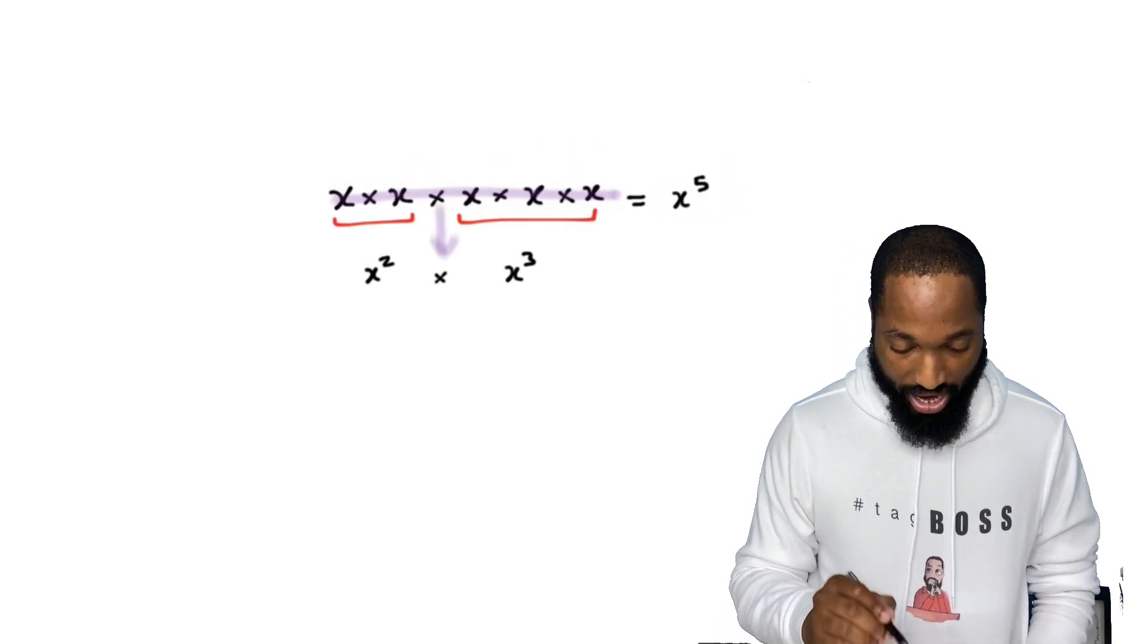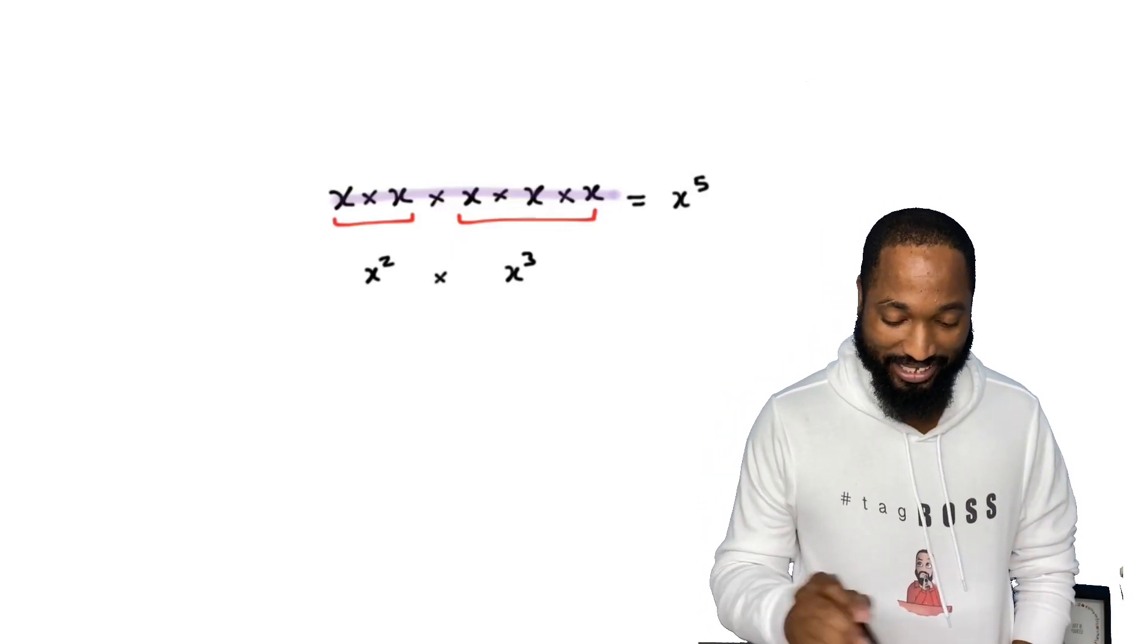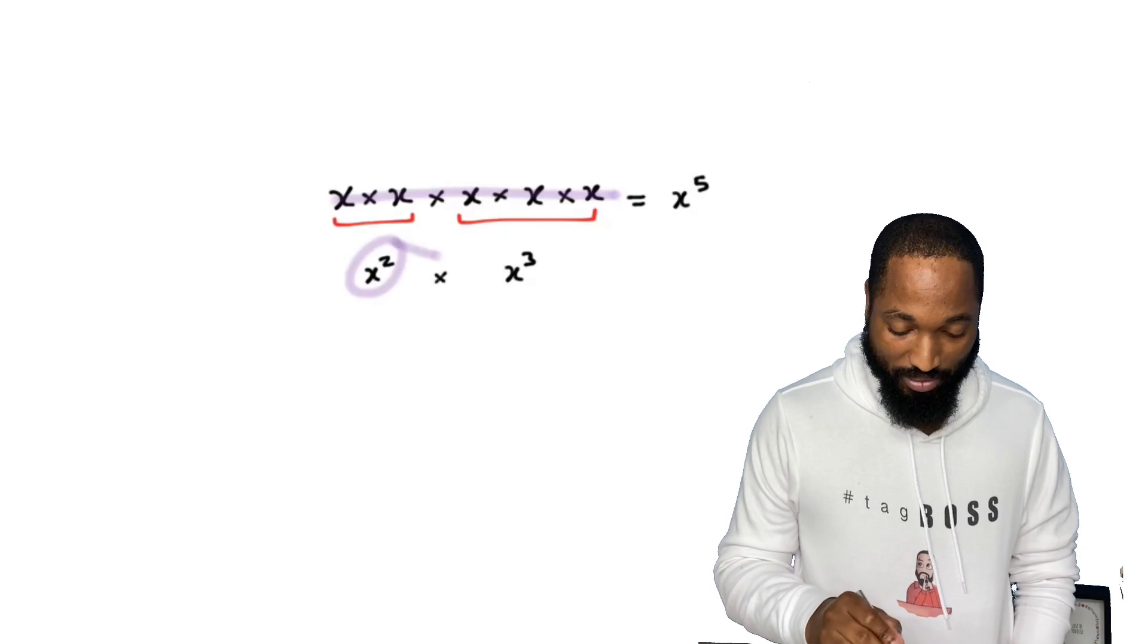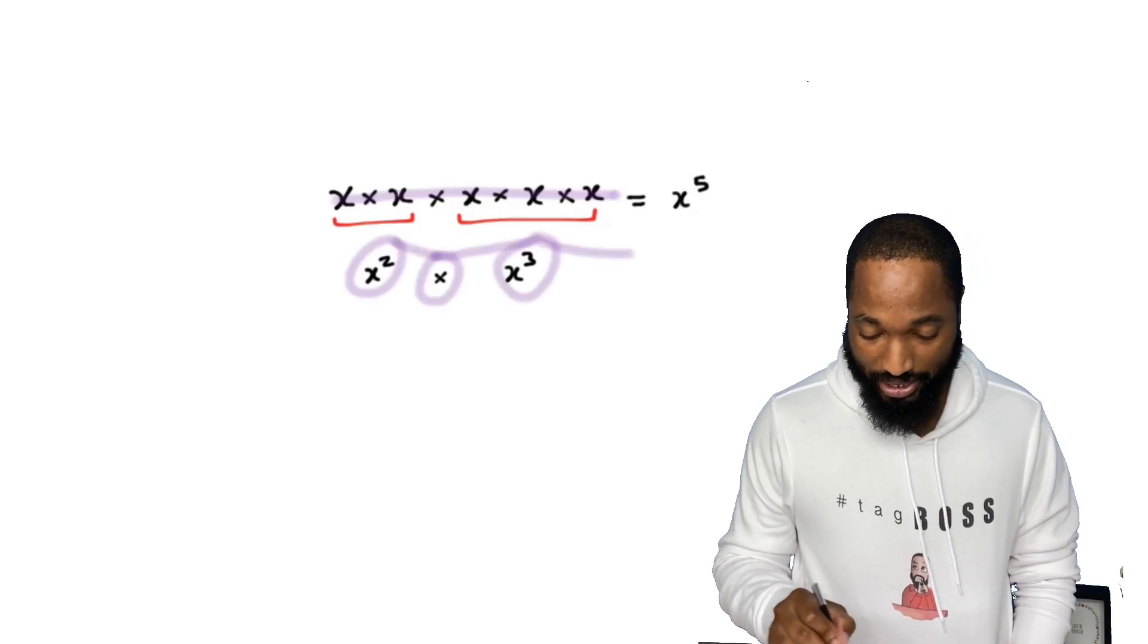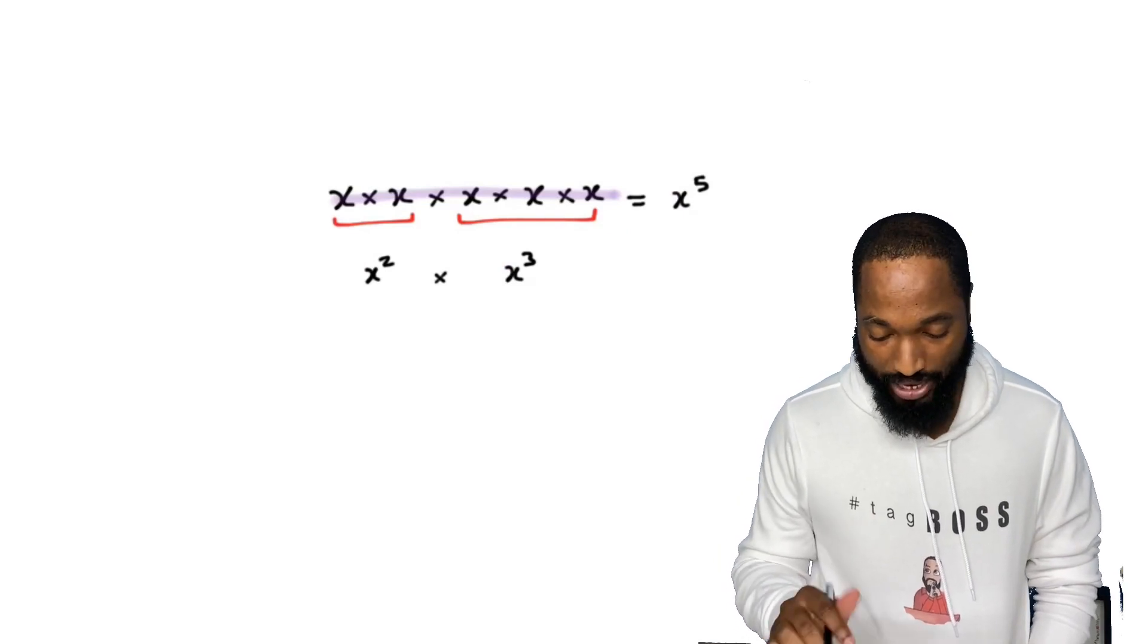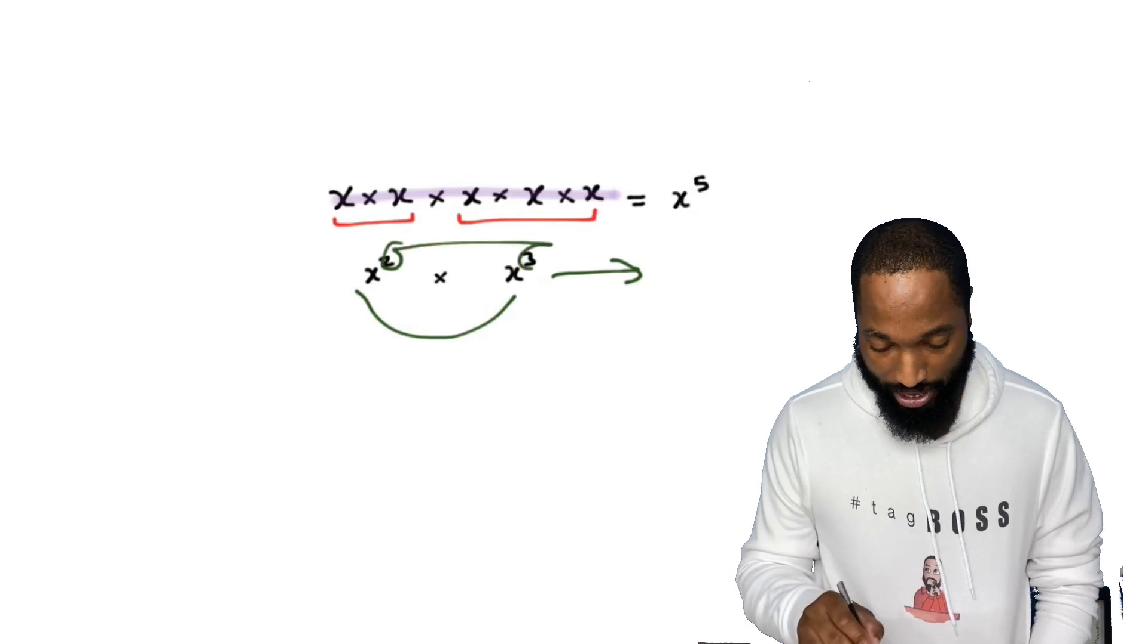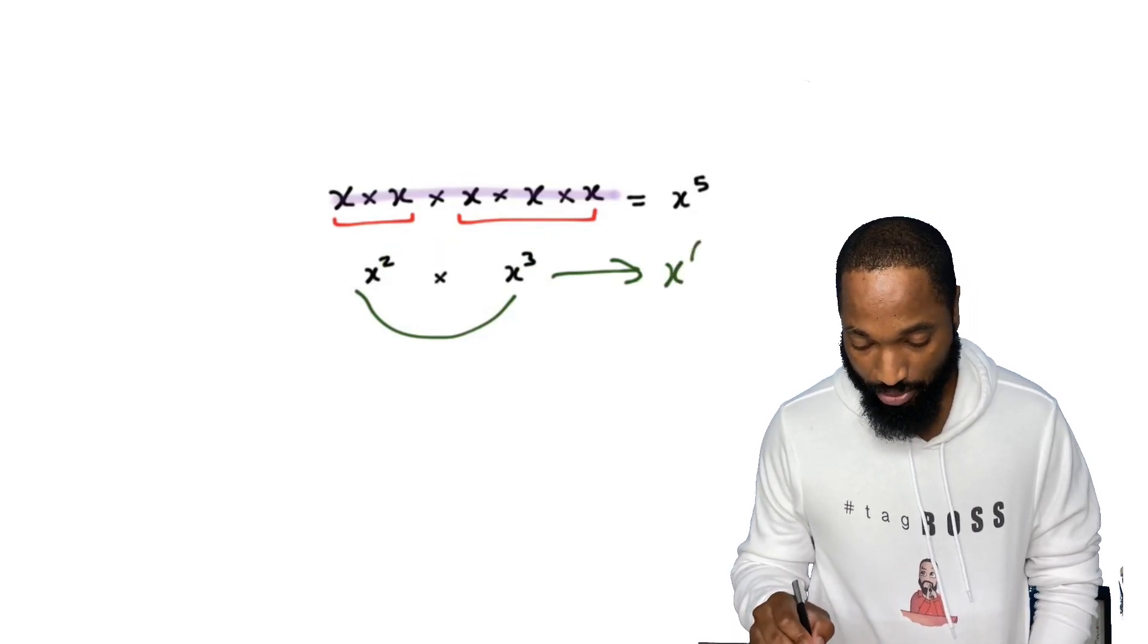But if we consider it as the whole thing is x five times, that tells you that x squared multiplied by x cube is x to the power five. Now that is a little strange for some people because if you ask some people, they might think multiply the two by the three and get x to the power of six. No.